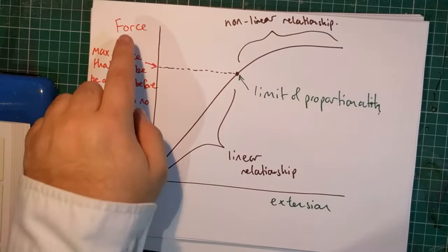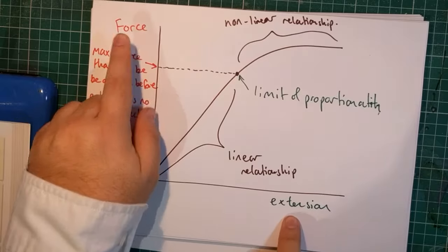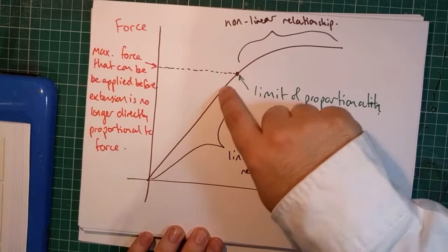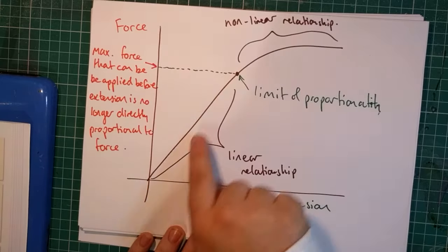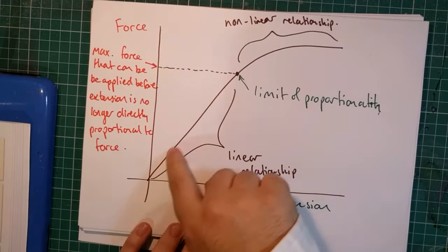So, here's a graph of force against extension. You can see we have this line here. And for the first part, the two variables follow a linear relationship. This is a straight line.